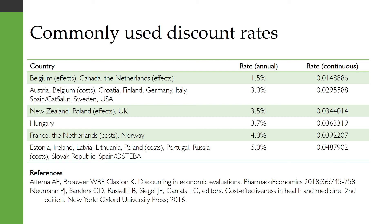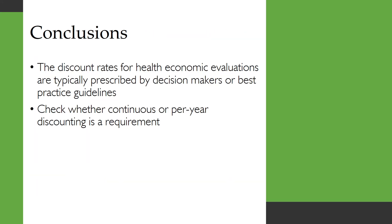Here is a selection of discount rates you may see in practice being recommended. They generally range from 1.5% all the way up to 5%, with 3% and 3.5% being quite common. Some countries — such as Belgium, the Netherlands, and Poland — have different discount rates for costs and effects. Typically when you see this, effects are discounted at a lower rate, which indicates a preference for investing in preventative measures: spending money now and getting the benefits later. Discount rates for health economic evaluations are typically prescribed by decision makers or best practice guidelines, so you should identify them rather than deciding your own.